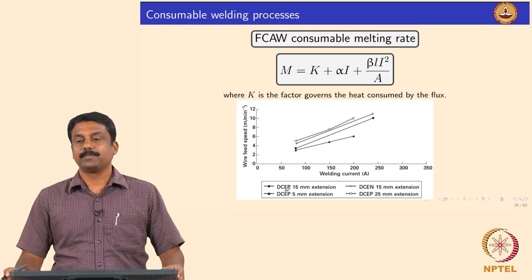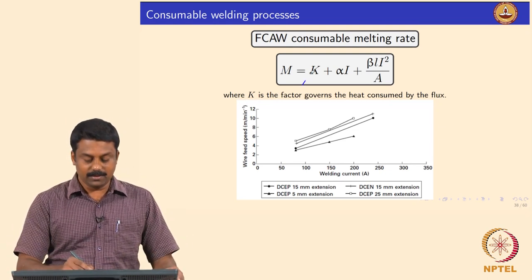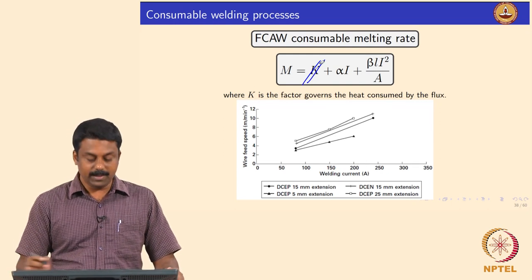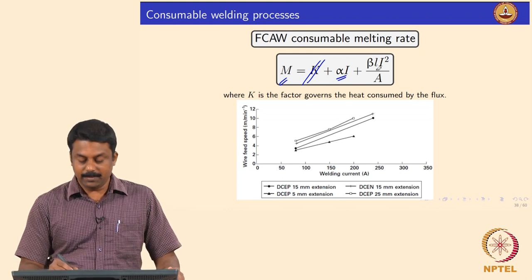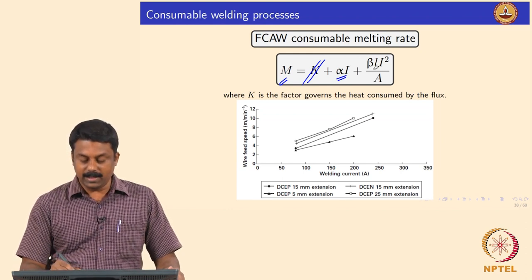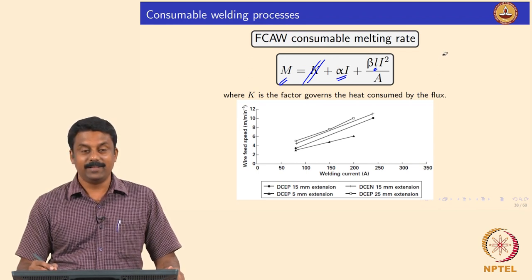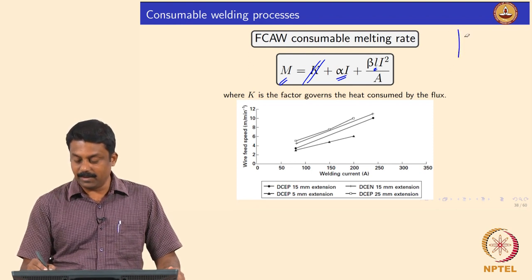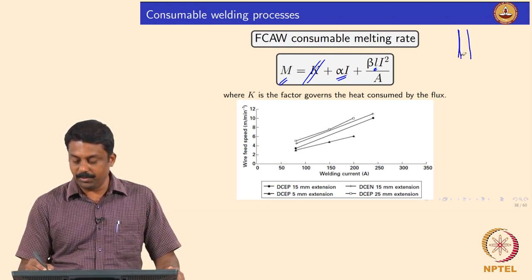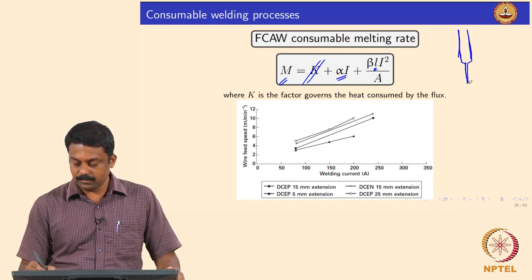Regarding the melting rate — in GMAW, what is the melting rate? The melting rate of the consumable is αI + βLI²/A, where L is the stick-out length. You have a contact tube and the electrode comes in forming an arc.